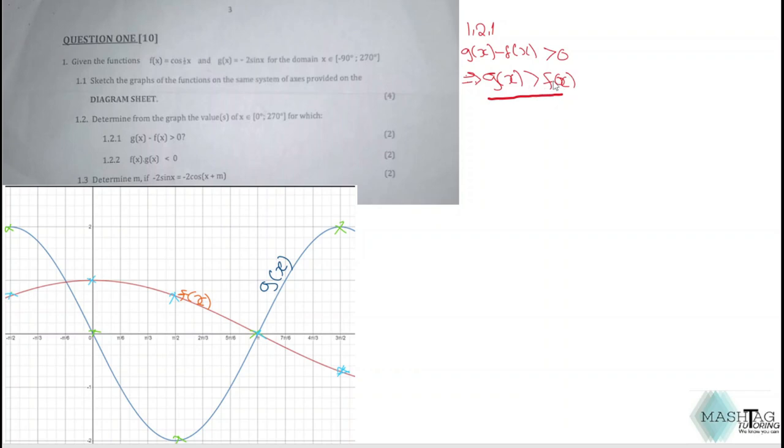You need to go back to the graph and see where g(x) is actually greater than f(x) for the domain 0 to 270°. Where is g(x) greater than f(x)? Simply, I can tell you that the blue line is higher than the red line from here all the way to there.